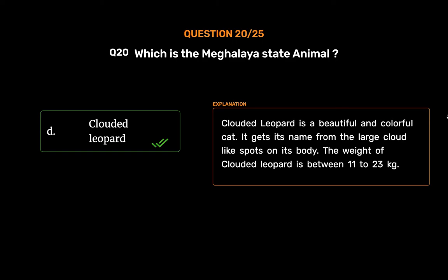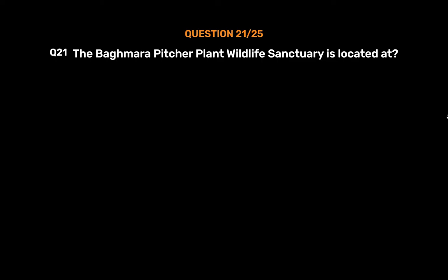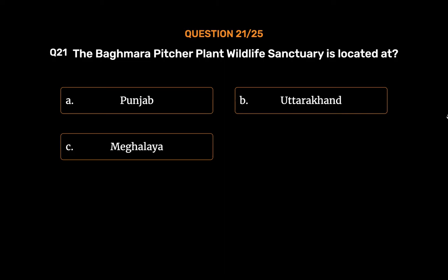Question number 21. The Baghmara Pitcher Plant Wildlife Sanctuary is located at: Option A: Punjab. Option B: Uttarakhand. Option C: Meghalaya. Option D: Assam.